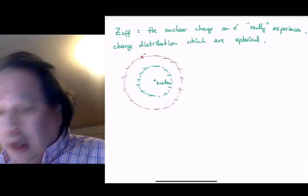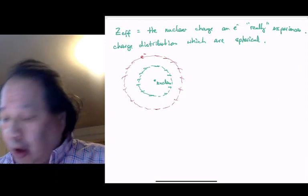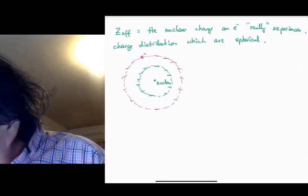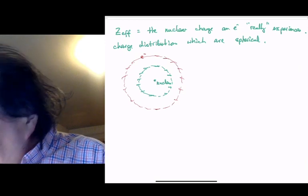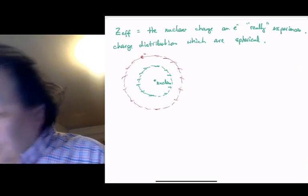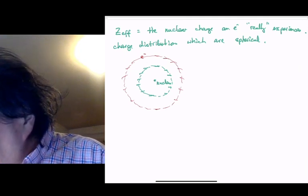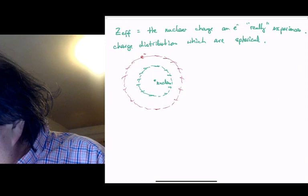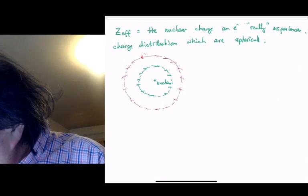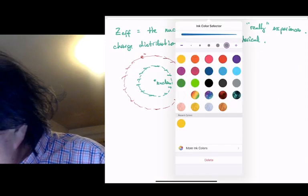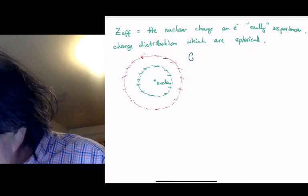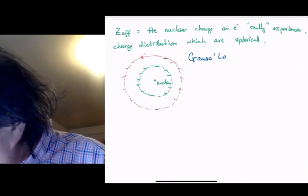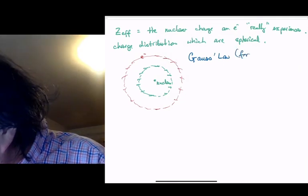In the case where all the charges are in spheres, and remember atoms are spheres, the electrostatic forces that electrons exert on each other obey something called Gauss's law for spherical charge distributions.